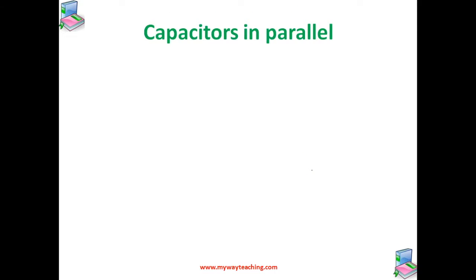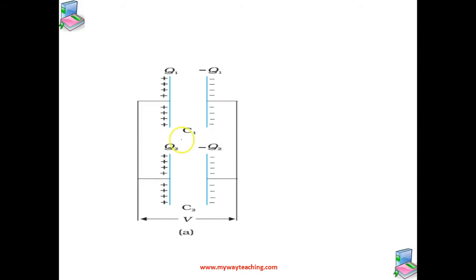The other form is capacitors connected in parallel. As you can see in this figure, two capacitors C1 and C2 are connected in parallel. Parallel connection means they are connected to the same two points — they are not connected end to end, but instead they are both connected between the same two points.